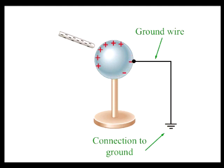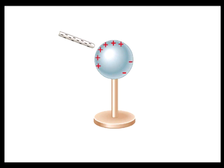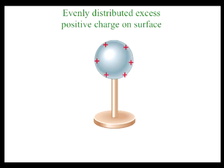If the grounding wire is then removed, followed by the rubber rod, the sphere is left with a positive net charge. The process of giving one object a net electric charge without touching the object to a second charged object is called charging by induction.